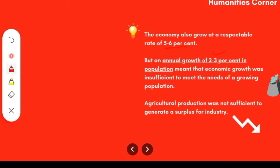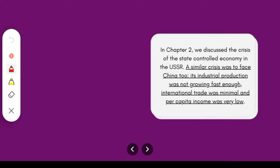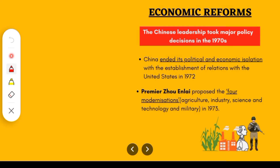The Chinese economy grew rapidly at about 5-6% per year. But there was a disadvantage — the pace of population growth was also about 2-3% annually. Because the population was growing so fast, they faced a shortage of food. Agricultural production, which was previously exported, no longer had a surplus for export. This was a similar crisis to what the USSR faced in Chapter 2 — the population is increasing, agricultural production is reduced, there is food shortage, industrial production is not growing, there is no international trade, and per capita income is very low. The economy was degrading, making reform necessary for China.